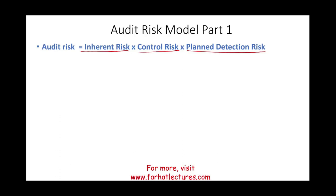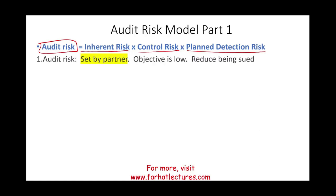Audit risk is set by the partner — the auditor sets the audit risk — and the objective is to set the audit risk low. If I want to be sure and don't want to take any chances, I set my audit risk low. Why? Because that's going to reduce my chances of being sued by the client.